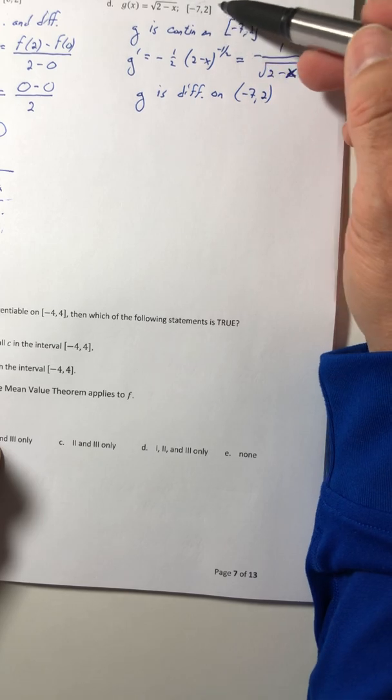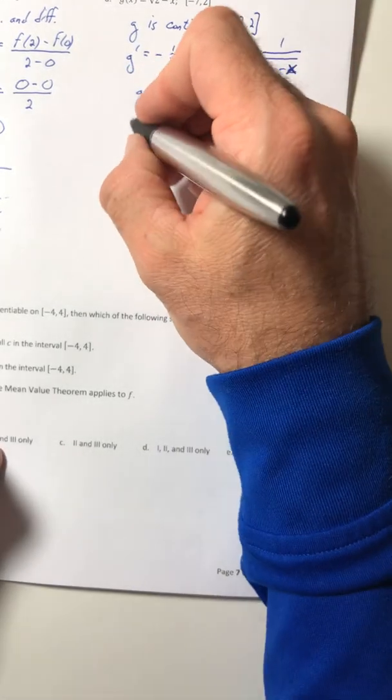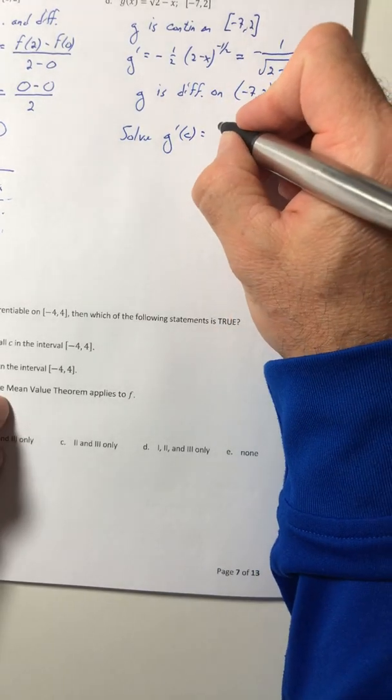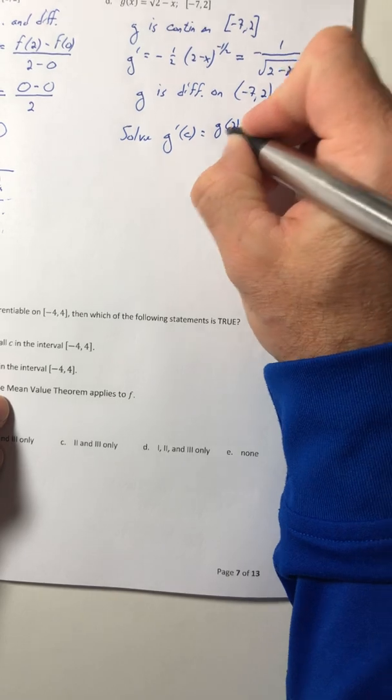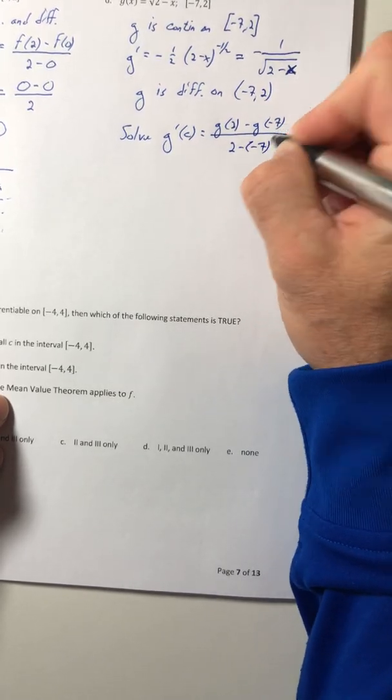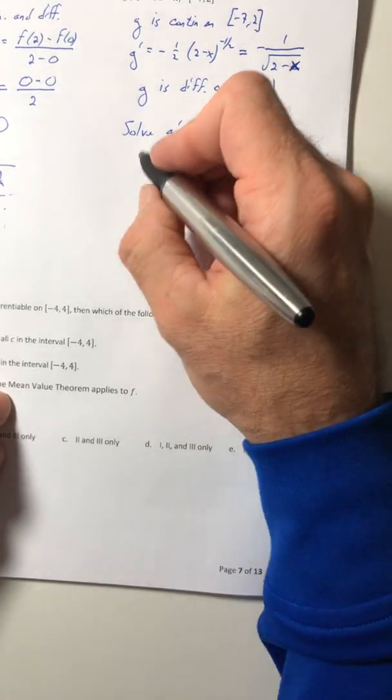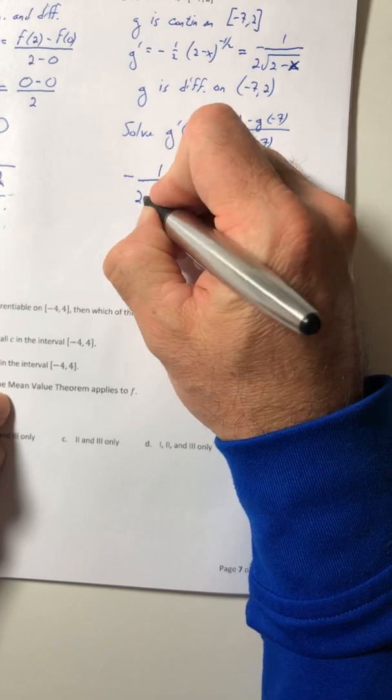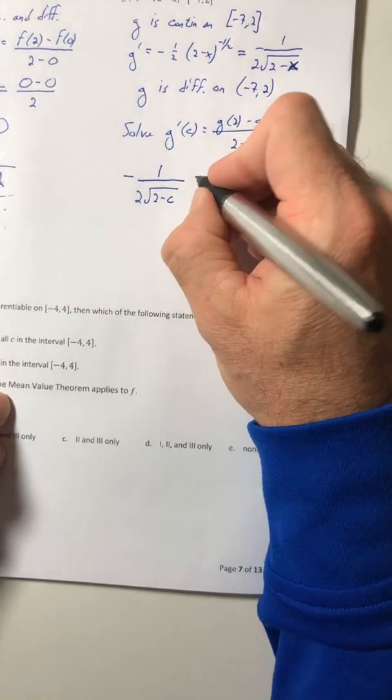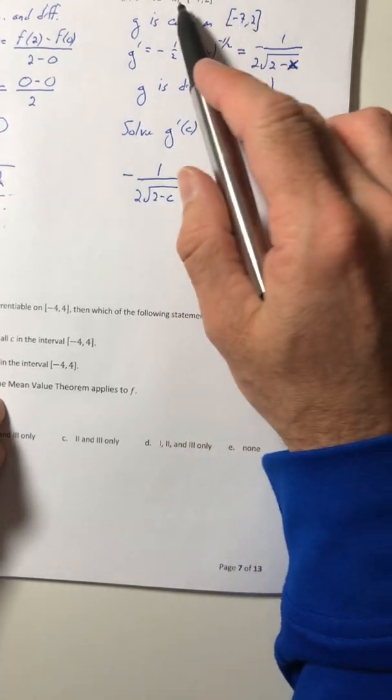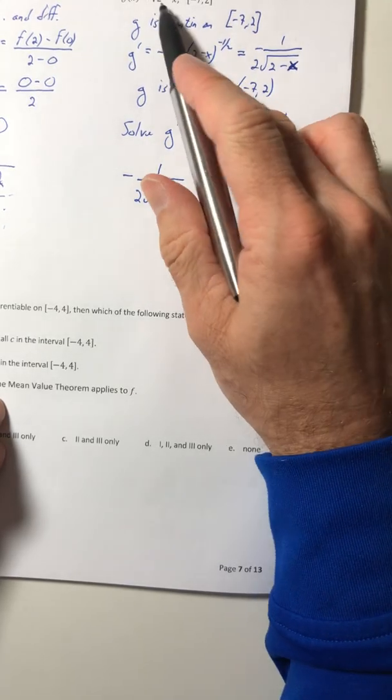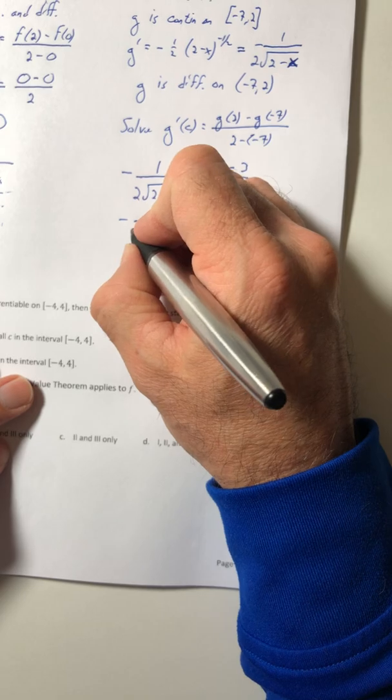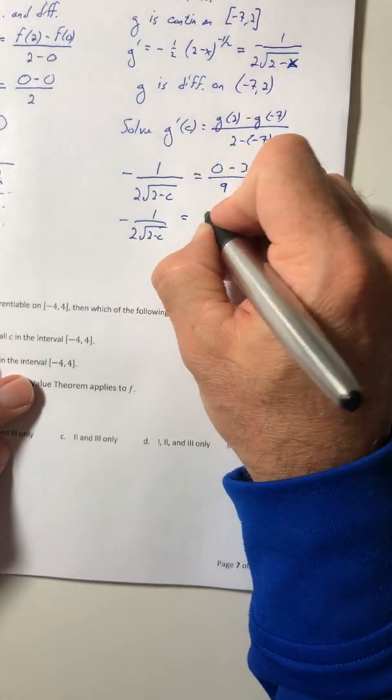So g is differentiable on the open interval from negative seven to two. So just continuity has to be the whole thing, differentiability you leave out the endpoints. Okay, so now you have to solve g prime of C is equal to g of two minus g of negative seven all over two minus the negative seven. So g prime of C, that's just this with a C in there. And then when you work this out, g of two, that's just zero. G of negative seven, that's three. Two minus the negative seven is a nine. So negative one over two, root two minus C is equal to a negative one-third.